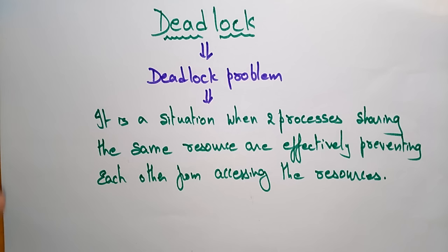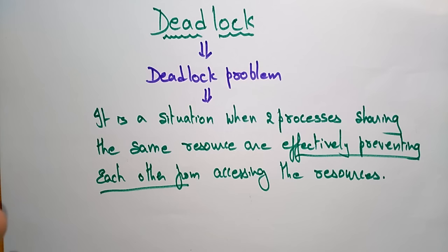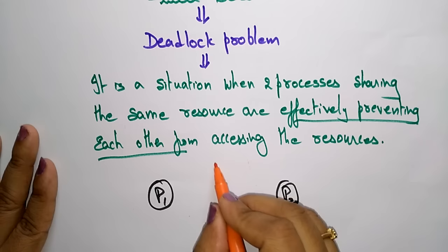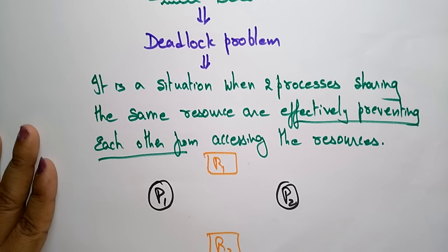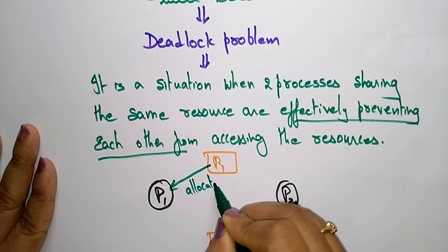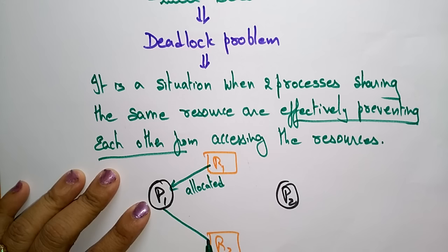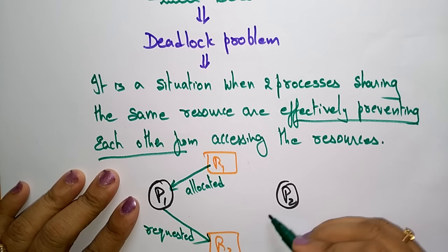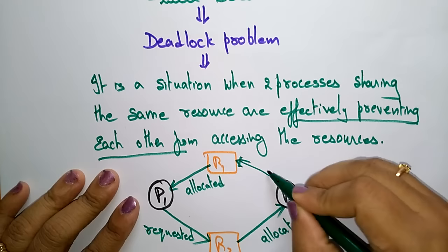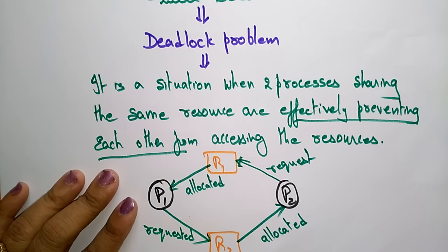Let us take a simple example. P1 is a process and P2 is a process. R1 is a resource and R2 is another resource. P1 is already accessing R1 — R1 is allocated to P1 — but P1 is requesting R2. On the other side, R2 is already allocated to P2, and P2 is requesting R1.